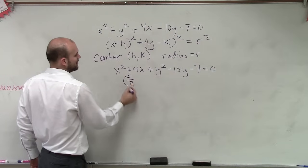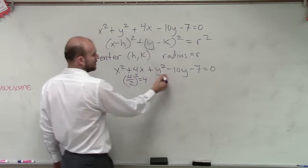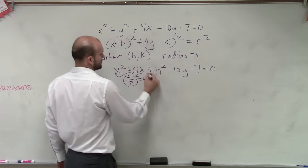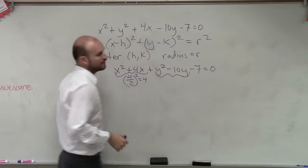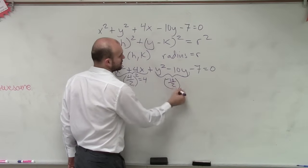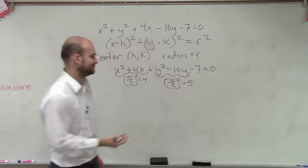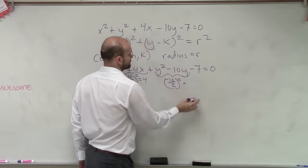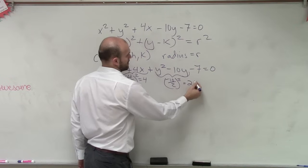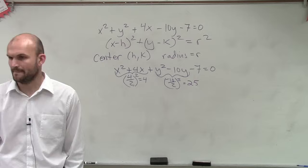So I'll take my b divided by 2, which is 4 divided by 2 squared, which equals 4. And then over here, I take my b divided by 2, which is my negative 10 divided by 2, and I square it, which then is going to equal 25.